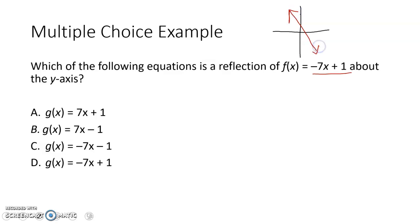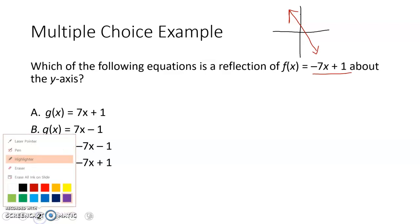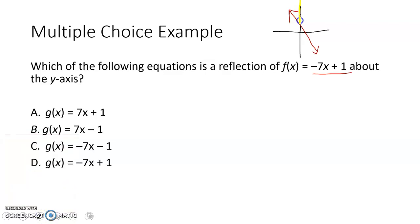I'm thinking about what the y-intercept and the slope of that line would be. And we want to reflect it about the y-axis, which is our vertical axis here. So if I were to reflect that about the vertical axis, this would go something like that up top and then something like this down at the bottom.